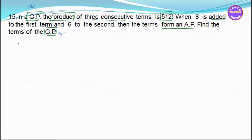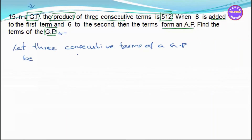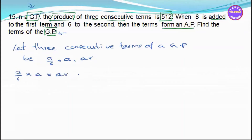Let the three consecutive terms of the GP be a/r, a, and ar. The product of these three terms equals (a/r) × a × ar = a³. Setting a³ equal to 512, we get a³ = 512.